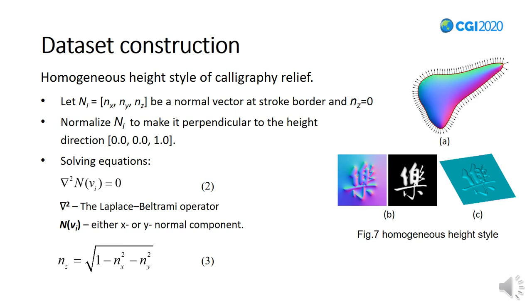Homogeneous style of relief is constructed by estimating a new normal field. First, Laplacian-based normal filtering is applied on the inhomogeneous height field to reduce normal noises. Let Ni be a normal vector at stroke border. We change Nz to 0 and make it perpendicular to the height direction. Taking Ni as inputs, the x and y normal components of the mesh vertices are estimated by solving Equation 2.